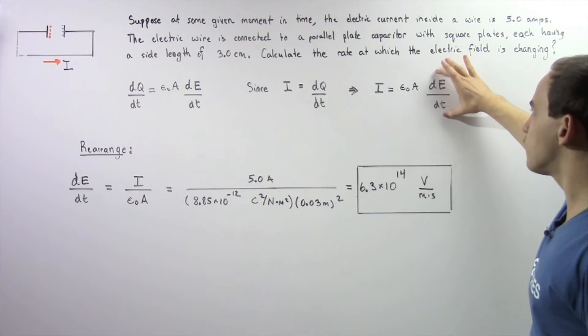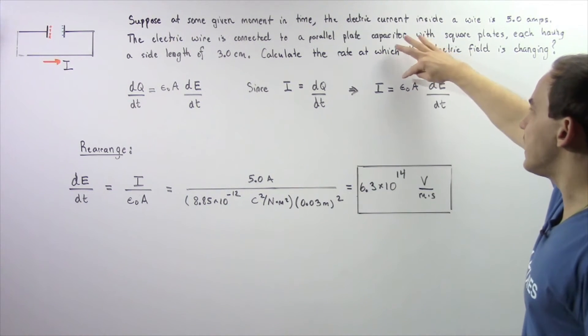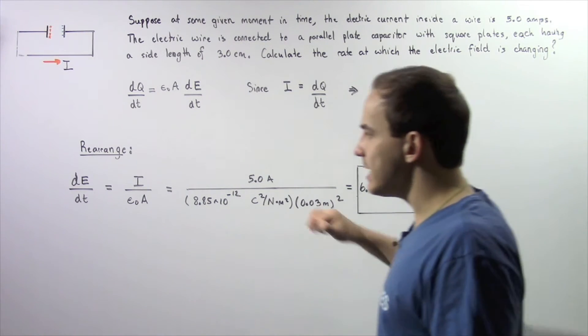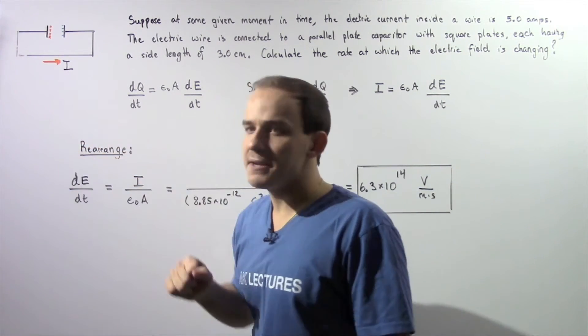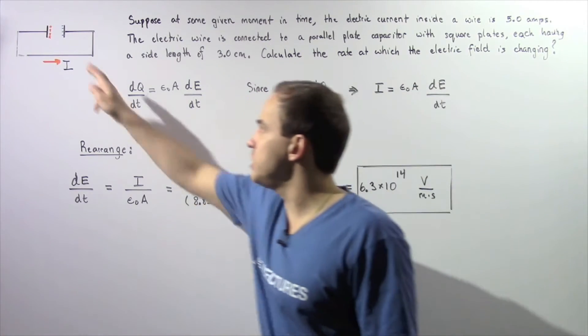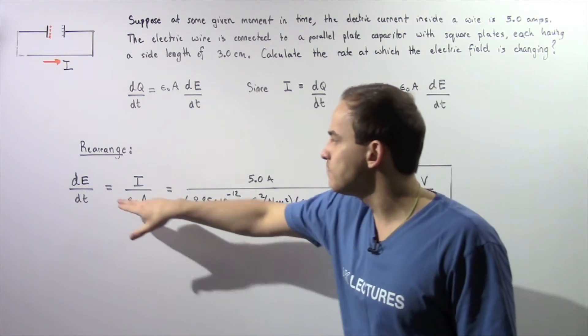Let's solve for this by dividing both sides by epsilon naught multiplied by A. We see that dE/dt, the rate at which our electric field between the plates is changing with respect to time, is equal to the instantaneous electric current I divided by epsilon naught multiplied by A.